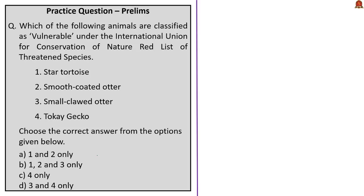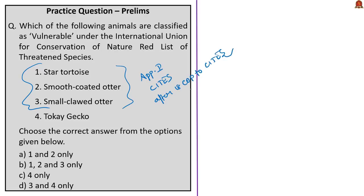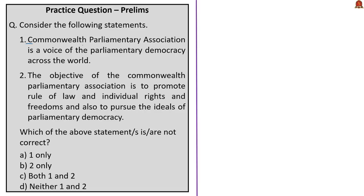The following question asks which animals are classified as Vulnerable under the IUCN Red List. Star tortoise, smooth-coated otter, and small-clawed otter have recently been moved to Appendix I of CITES, as the 18th COP to CITES approved India's proposal for their better protection. All three are also listed as Vulnerable on the IUCN Red List. Tokay gecko is listed as Least Concern, so it should not be in the answer. The correct answer is option B: one, two, and three only.